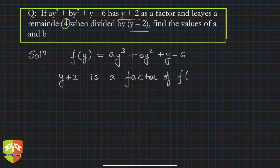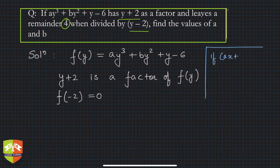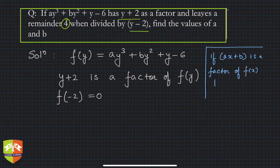Given that (y + 2) is a factor of f(y), by the factor theorem, f(−2) must equal 0. Recall that the factor theorem states: if (ax + b) is a factor of f(x), then f(−b/a) = 0.